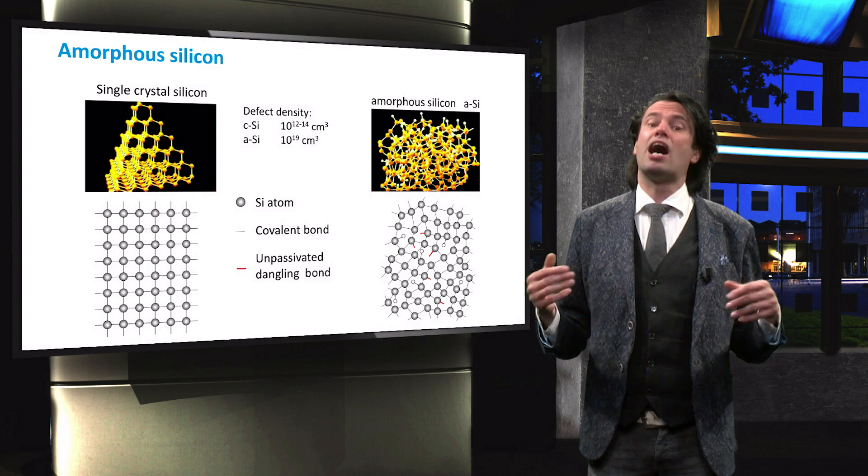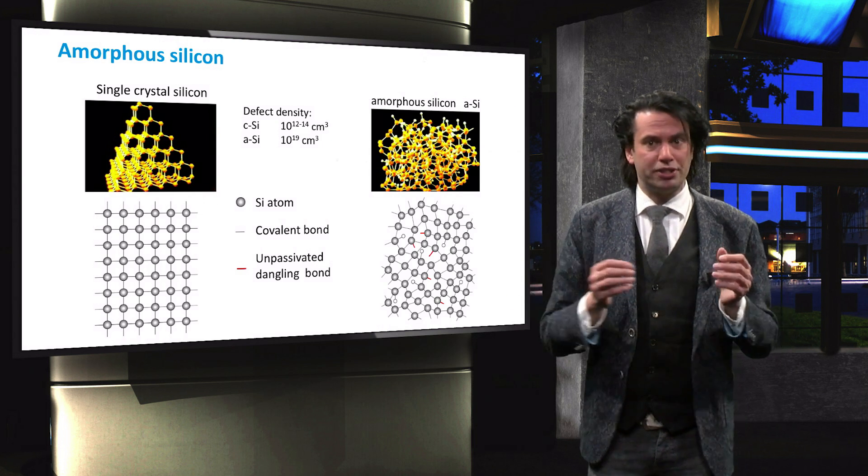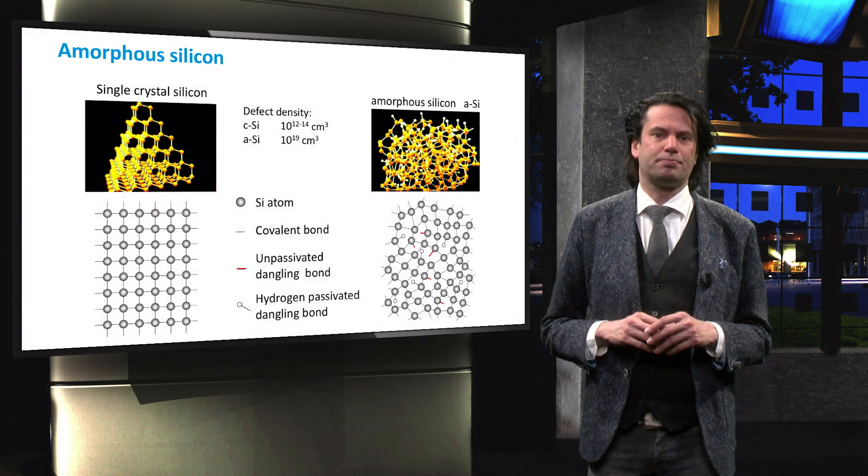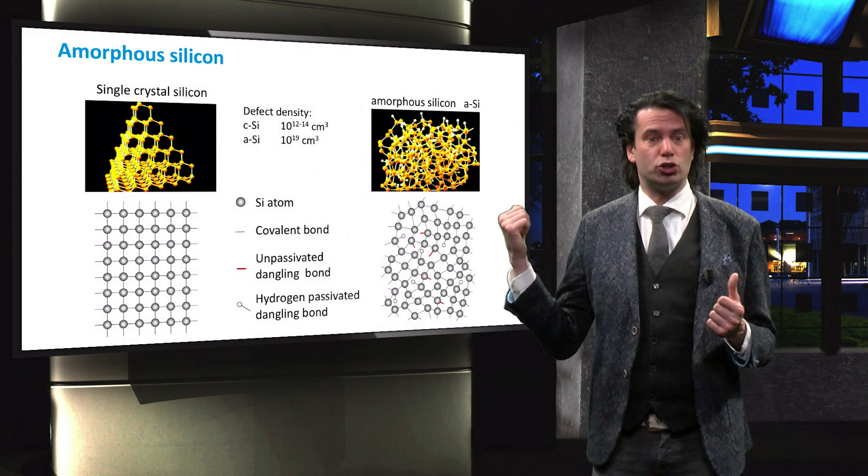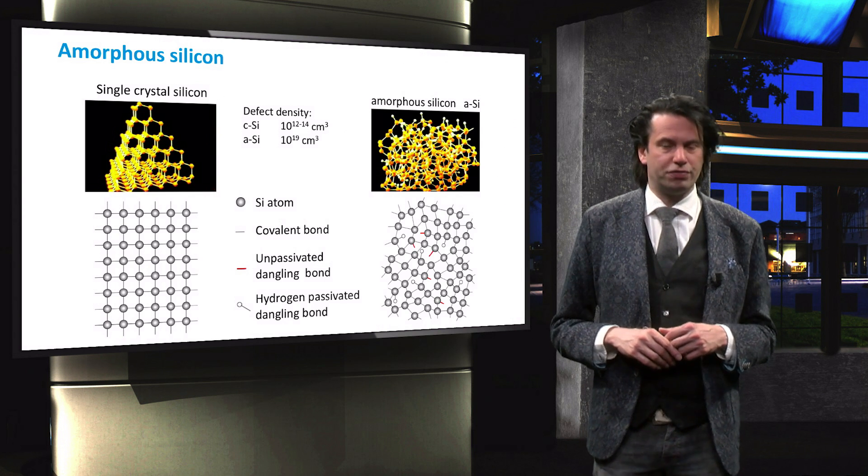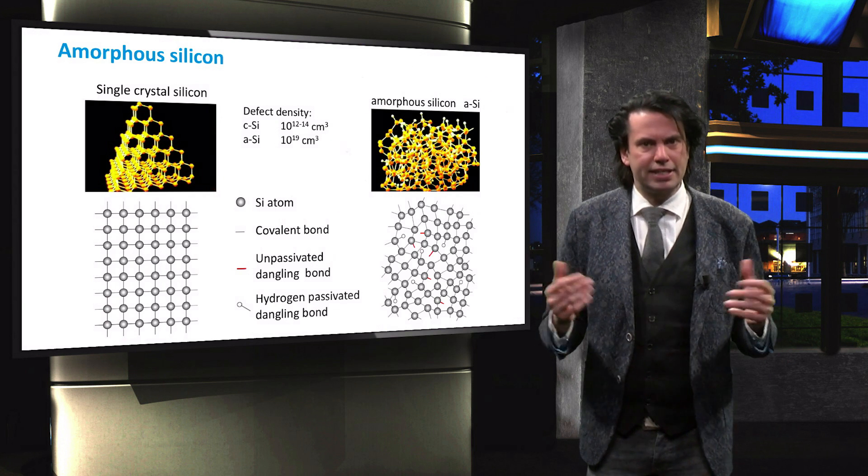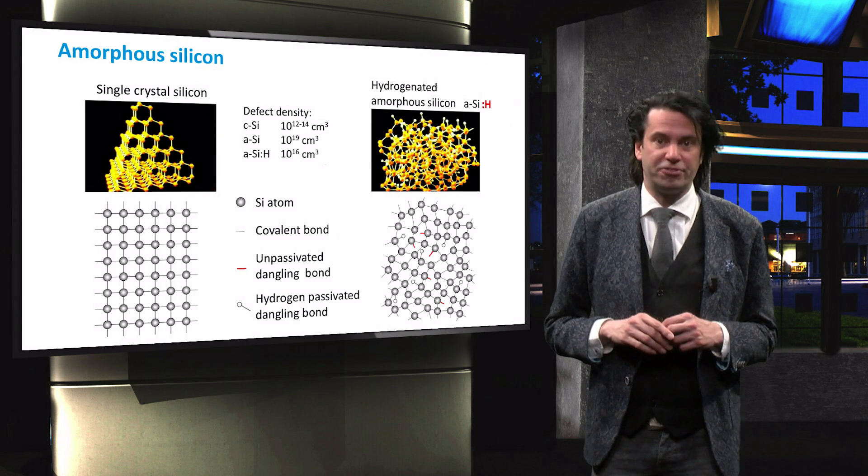Therefore, amorphous silicon is hydrogenated. The small hydrogen atoms attach to the dangling bond, thereby passivating the defect. A hydrogen-passivated dangling bond is indicated by the small white circle on the end of the dangling bond. A hydrogen-passivated material is indicated by the addition of colon H to the abbreviation.